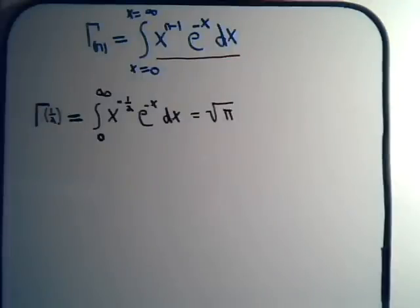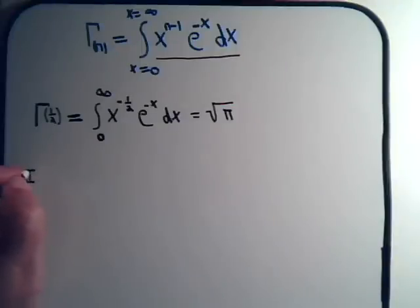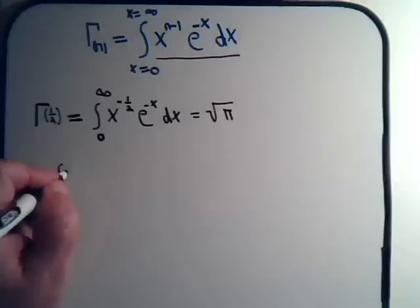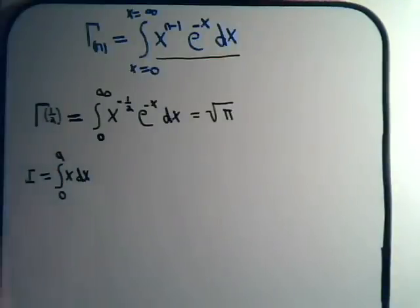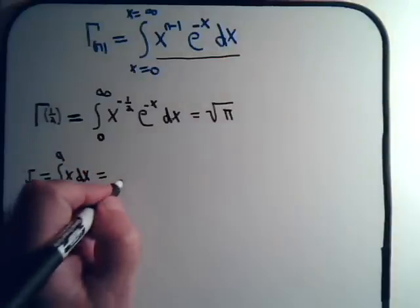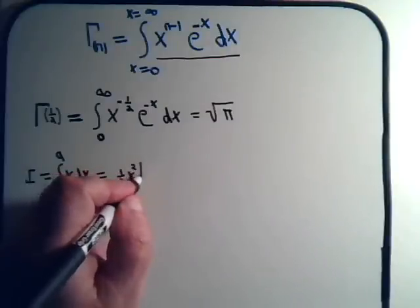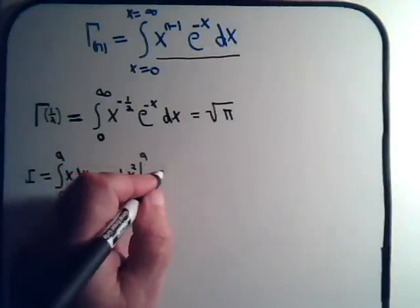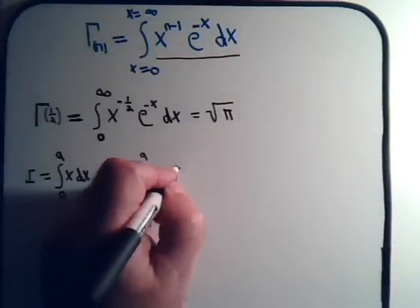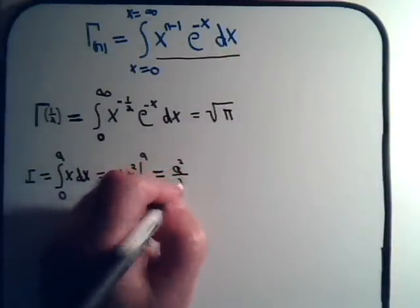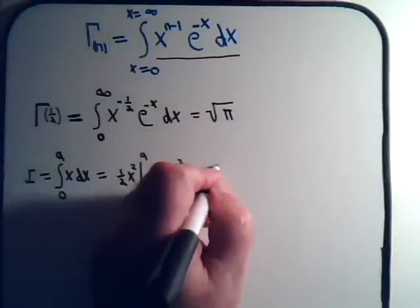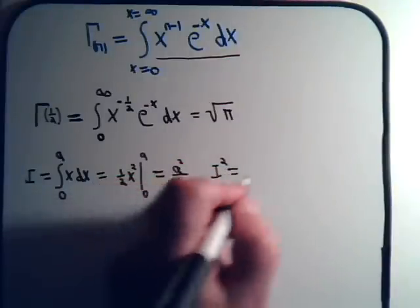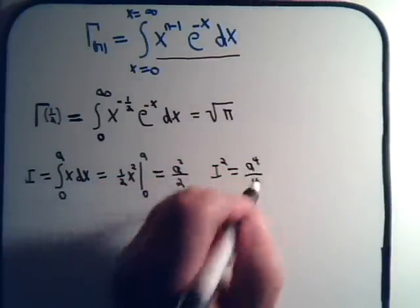To go about this, first let's consider the following. Suppose we had the integral of x dx going from zero to a. That would just be one-half x squared from zero to a, which equals a squared over two. And that integral squared would be a to the fourth over four.